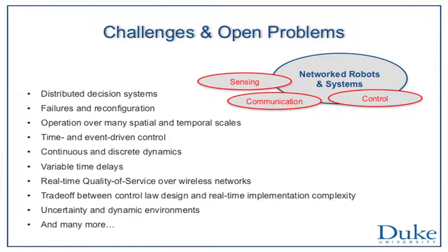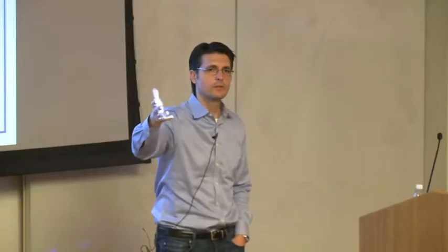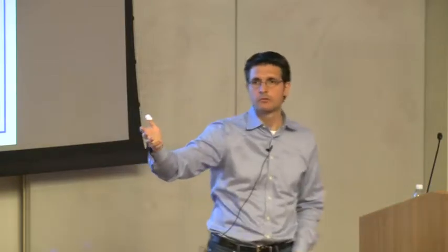If we put these different components together, this is how we view network systems. There are a number of challenges. First, these are distributed decision systems - you cannot assume there's somebody collecting all the information, doing the processing, and sending it back to the agents. The robots need to make their own decisions. They can fail, so you need protocols that can reconfigure the remaining group to maintain operation.